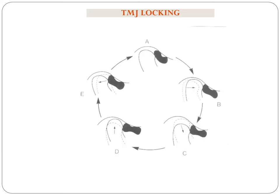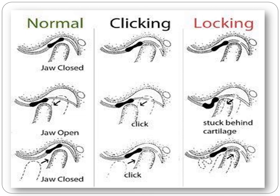In the normal position the disc sits between the condyle and mandibular fossa. In disc displacement with reduction, when you close the disc is displaced anteriorly, but when you open the mouth, the condyle clicks past the disc back into position — a reciprocal click. In non-reducing displacement — closed lock — the disc slips off and never returns, so there is no connection between the condyle and the disc when closing.